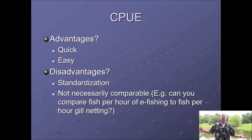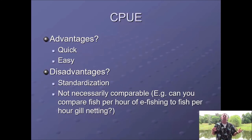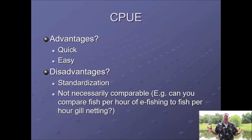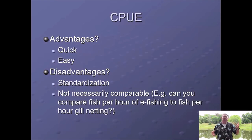Catch per unit of efforts are also not necessarily comparable. How do you compare a number of fish per hour electrofishing to number of fish per night trap netting? They're just apples and oranges — there's no standard unit you can use to convert them all to the same effort. They're only useful compared within a gear. So catch per unit of effort electrofishing is only useful compared to other electrofishing studies; you can't compare it to a trap net or trot line.